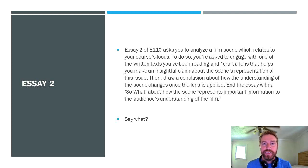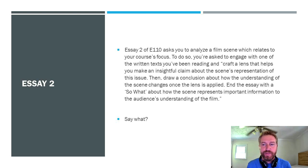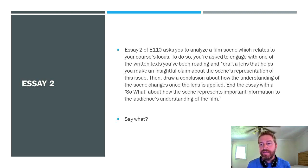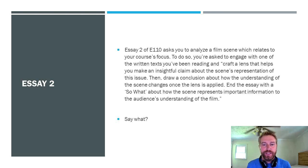This is going to be an important one because, as you know, Essay 2 of E110 asks you to analyze a film scene which relates to your course's focus. You're asked to engage with one of the written texts you've been reading and craft a lens that helps you make an insightful claim about the scene's representation of an issue. Then draw a conclusion about how the understanding of the scene changes once the lens is applied, and end the essay with a 'so what' about how the scene represents important information to the audience's understanding of the film. A lot of students read that and go 'say what?' — and that's what this presentation is going to be about. We're going to figure out what that's talking about and how we're going to accomplish it.